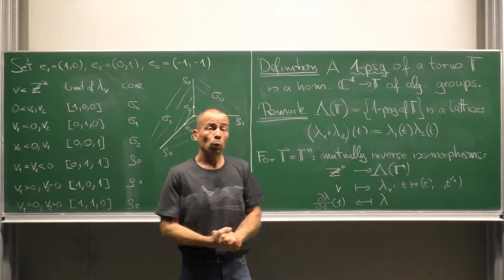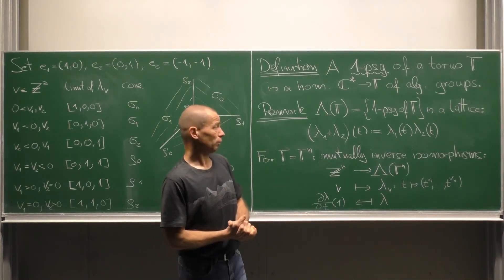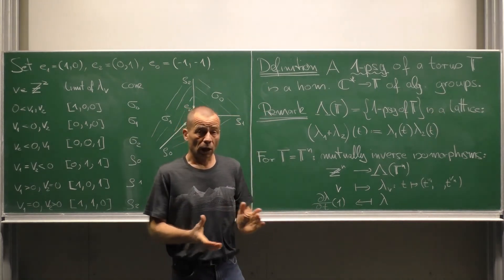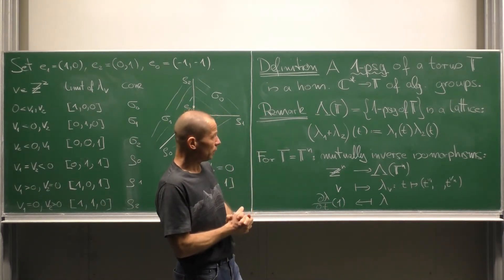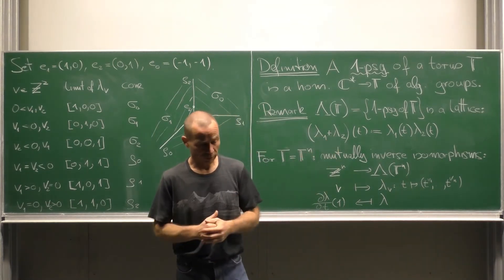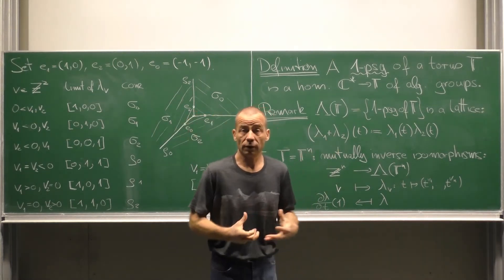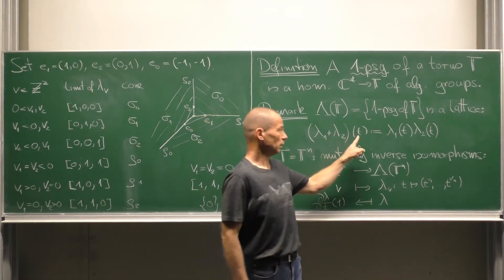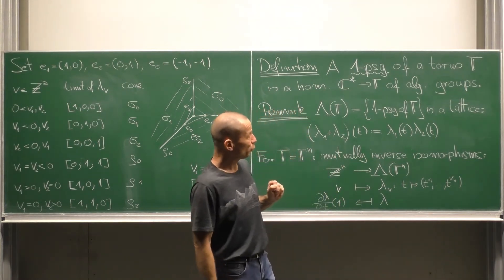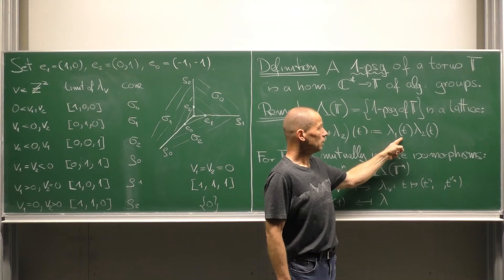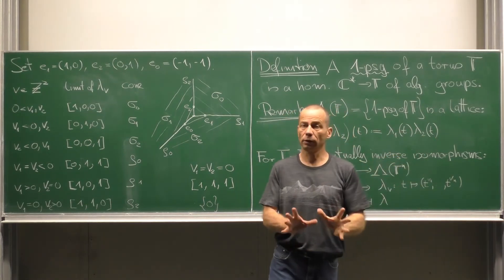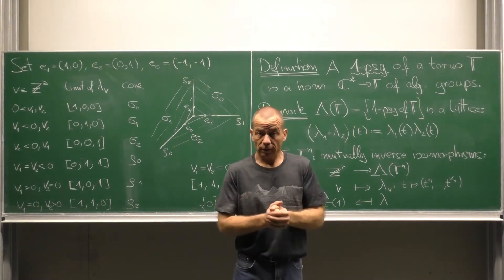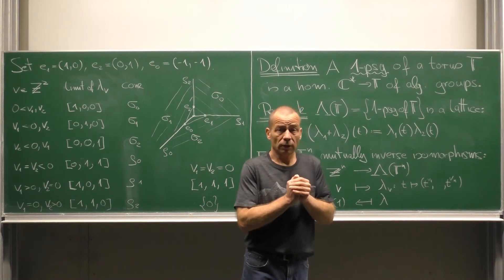The set of all one parameter subgroups of a given torus T is a lattice. How we define the lattice structure? We need to say what is the sum of two one parameter subgroups lambda 1 and lambda 2. This is defined pointwise. Lambda 1 plus lambda 2 evaluated at an argument T should be lambda 1 of T multiplied with lambda 2 of T in the torus.